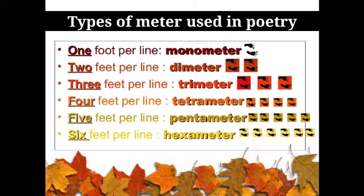We have different types of meter. A monometer refers to a line in a poem with only one foot. A dimeter has two feet in a single line. A trimeter has three feet. A tetrameter has four feet. And a pentameter has five feet in a single line. There are also other types such as hexameter, which means six feet in a line; heptameter, which means seven feet; and octameter, which means eight feet in a line. It is important to note that a line in poetry can also have more than one type of foot.